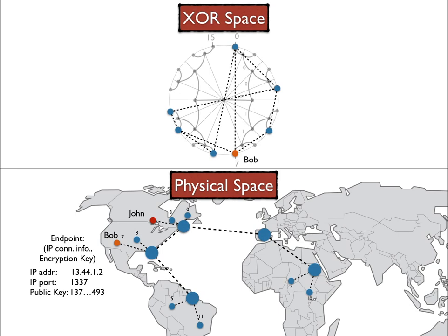In addition to these two pieces of information, John requires the public key of Bob in order to encrypt messages that will travel between them. So initially John creates a message, encrypts it using Bob's public key, which means that only Bob will be able to decrypt it, and sends it to him. That message contains the information for Bob to also connect back to John, and that connection establishes a secure channel between Bob and John.